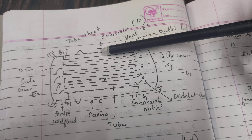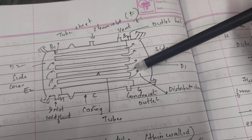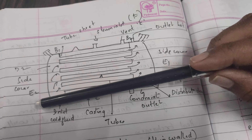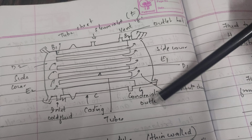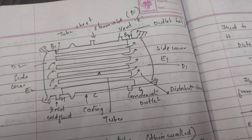The vent K is used for passing away non-condensed vapors. D1 is a distribution chamber and also serves as a side cover. The condensate outlet is labeled G and is used for passing away condensed vapor, while the vent K passes away non-condensed vapor. C represents the tubes present in the chamber, and H is the inlet for the cold fluid.